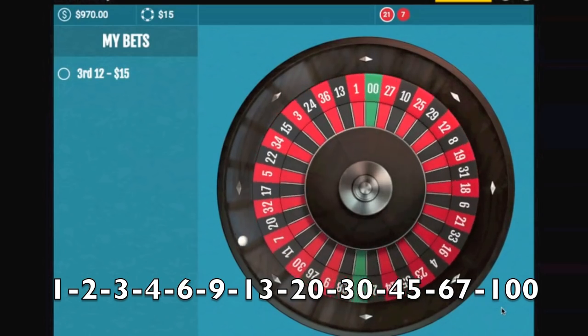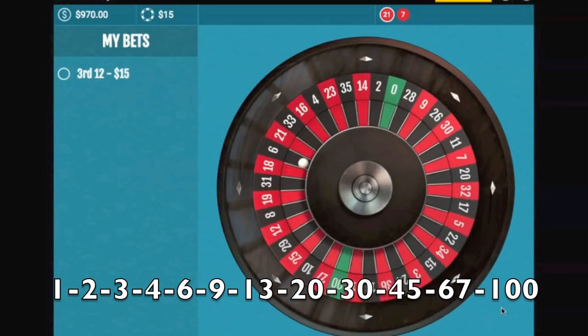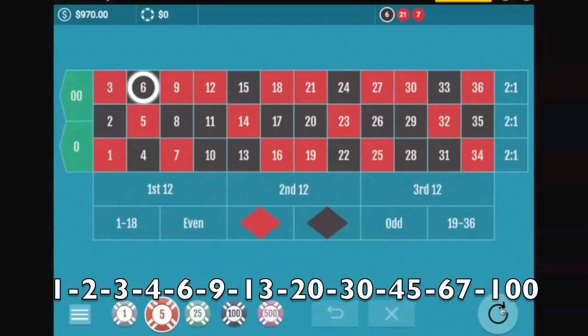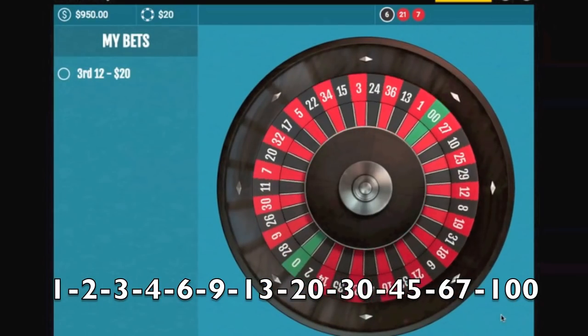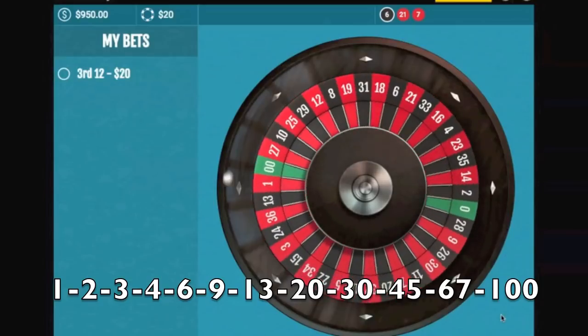So next number on the sequence is a four, so it's going to be a twenty dollar bet. And we're going to stick with the same dozens. Don't go chasing dozens hoping for a streak of the same dozen. Just stick on the same dozen and it'll come around to your turn eventually.